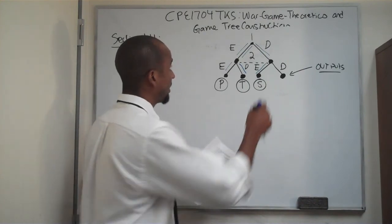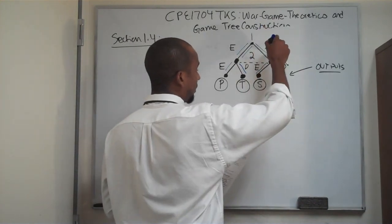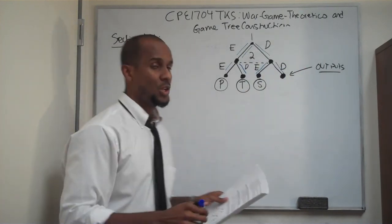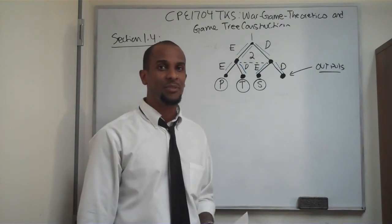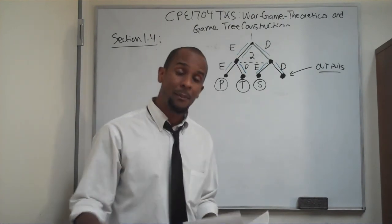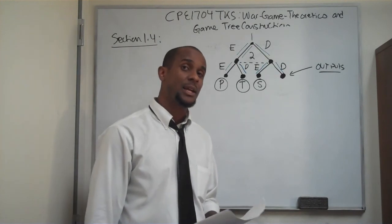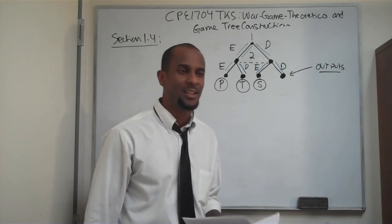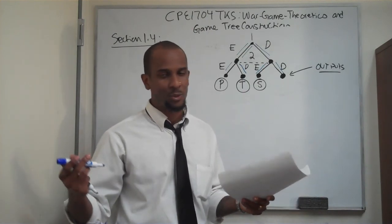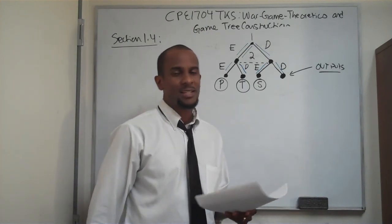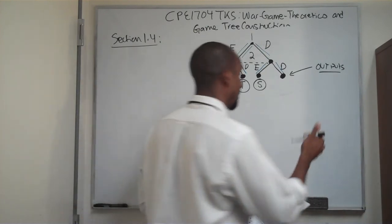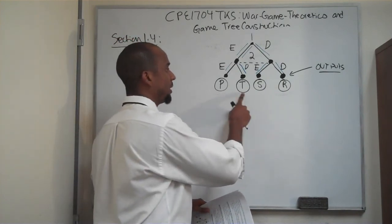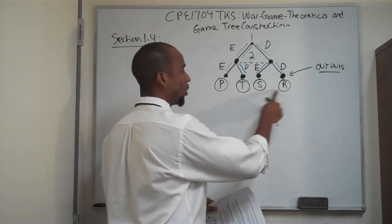The last option is if I choose to de-escalate the conflict and my opponent also chooses to de-escalate. We both decide what we were about to do is stupid — somebody was about to get hurt for nothing — and we say, let's not fight. We both don't fight, and that's labeled R. And that's a reward. So we have punishment, temptation, sucker, reward.